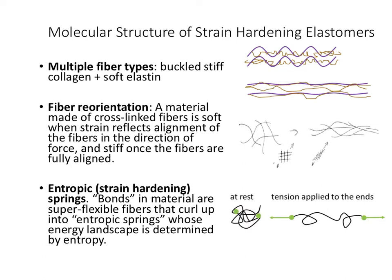There are three main molecular structures that make up strain-hardening elastomers. The first involves multiple fiber types, as we discussed with arteries: buckled collagen fibers in purple and very folded, soft elastin in brown. As we stretch the material over a large but not too large strain, these buckled collagen fibers straighten, which doesn't take much force — they actually have lower energy when straightened — but you are having to stretch the elastin to get there, which is fairly soft.